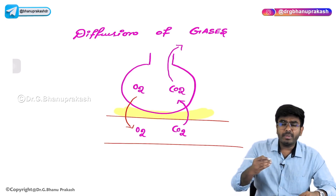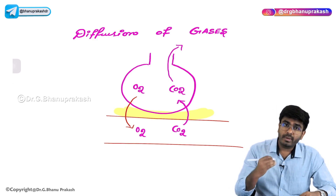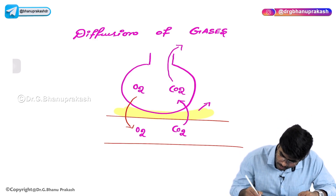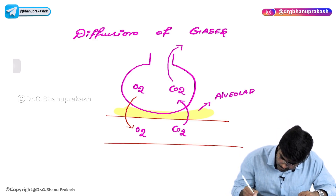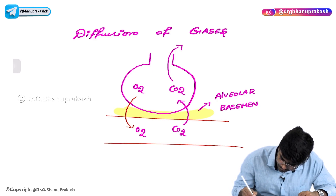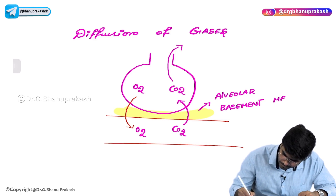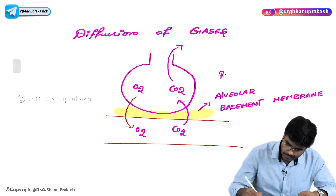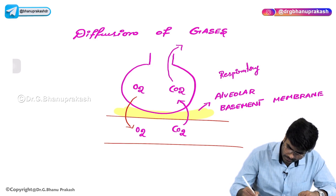Here, in between the alveolus and the pulmonary capillaries, there is a membrane present. This membrane is called the alveolar basement membrane, also called the respiratory membrane.